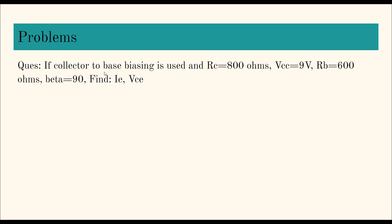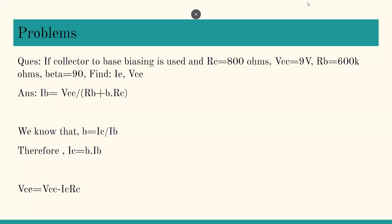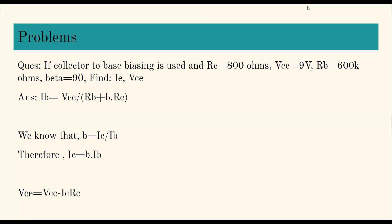You have to use KVL — Kirchhoff's Voltage Law — where the source voltage equals the sum of the rest of the voltage drops. Problem: If collector-to-base biasing is used with RC = 800 ohms, VCC = 9V, RB = 600K ohms, and beta = 90, find IE and VCE. For collector-to-base biasing, you should know all the related formulas.